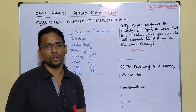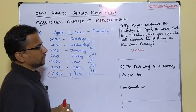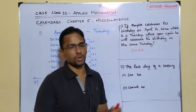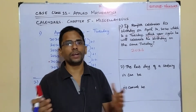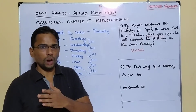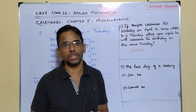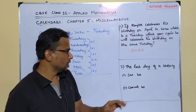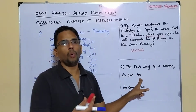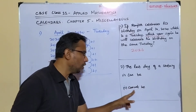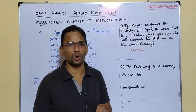There is another interesting question: Question 2. The question is about the last day of a century — that is, at the end of 100 years. The question asks: the last day of a century can be what days, and it cannot be what days?